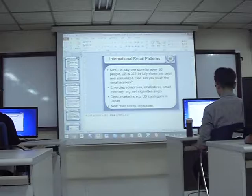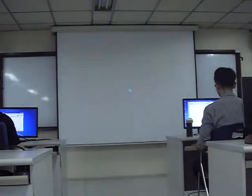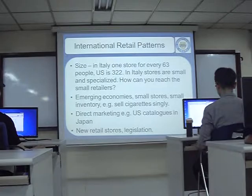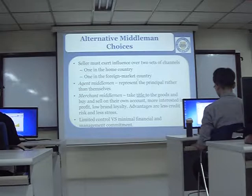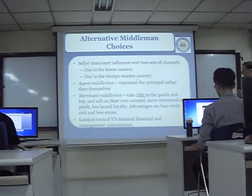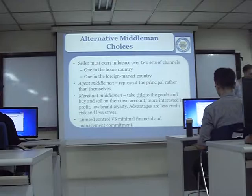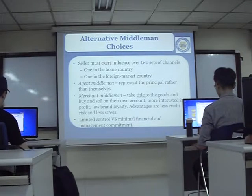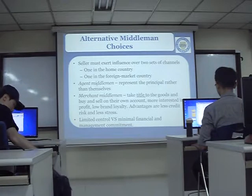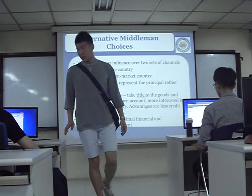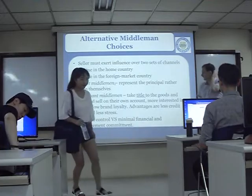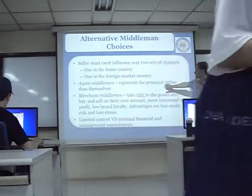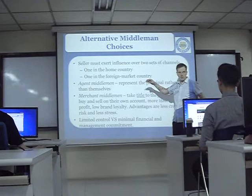We finished talking about the patterns of retail, so we continue from here. The seller should control two sets of channels — one in their own country and one in a foreign country. We can have an agent middleman or a merchant middleman. An agent is somebody who represents you; you make a contract with them and they represent you.